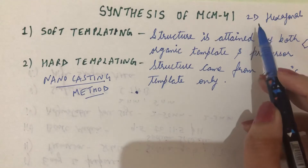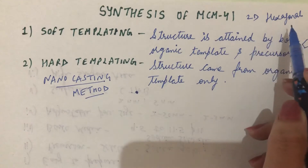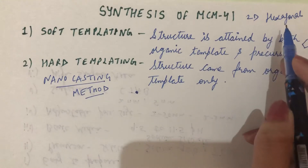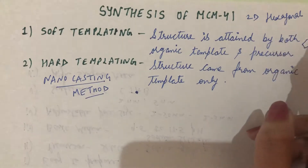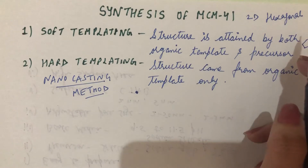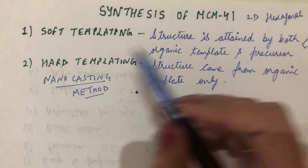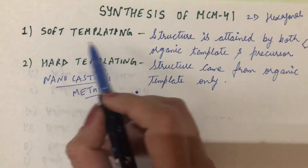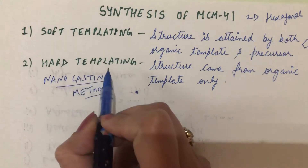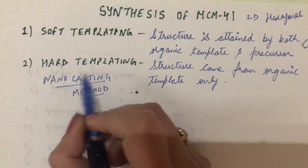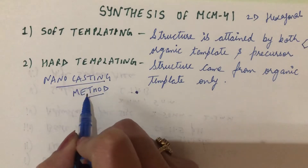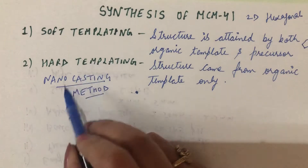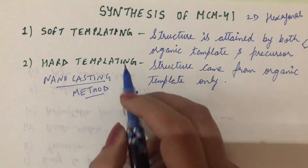MCM-41 is a 2D material of hexagonal geometry. To synthesize this particular structure we need a particular method. Hundreds of methods are available in the literature, and I have categorized them into two forms: the soft templating method and the hard templating method. The hard templating method is also known as the nanocasting method — these are one and the same thing, so please do not confuse them.